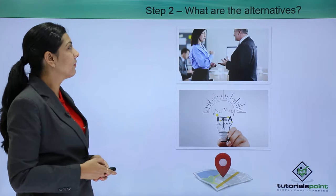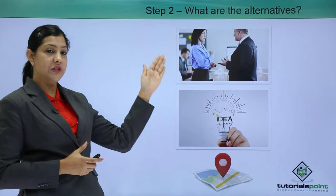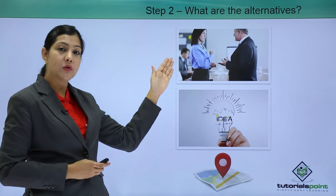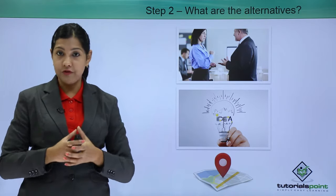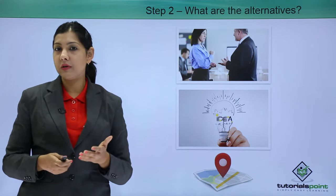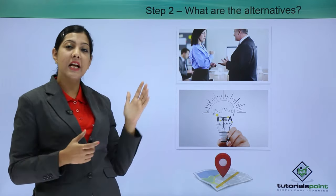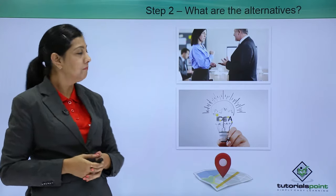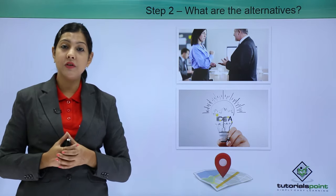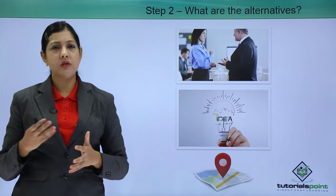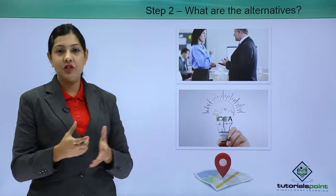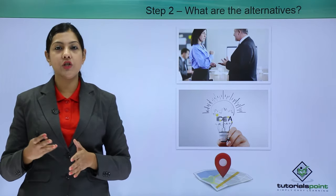Step two: what are the alternatives? Once you have defined the problem, you need to understand what the alternatives are. You can speak to other people — for personal problems, talk to family members, siblings, or friends; for professional problems, talk to co-workers, team members, or others in your organization. Talking to people really helps because it helps you find the best alternative. Second, spend time getting as many new ideas as possible — think outside the box, innovate, and think creatively. You can also try changing your location, as that can help you think of different alternatives.